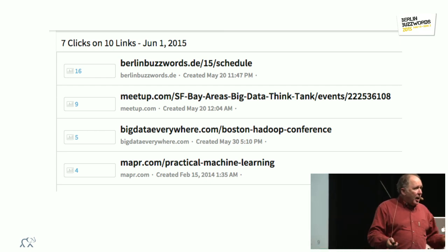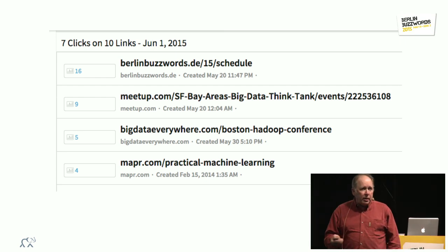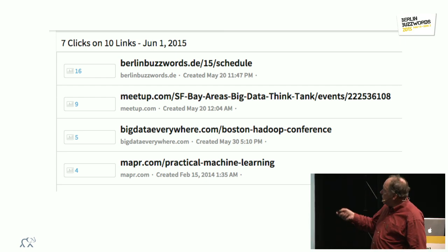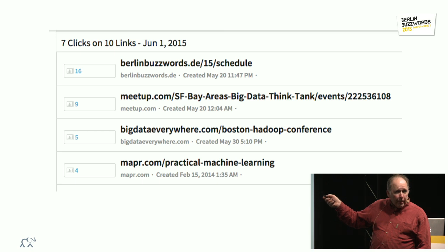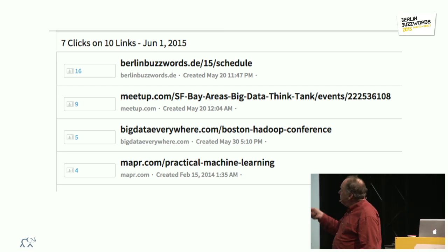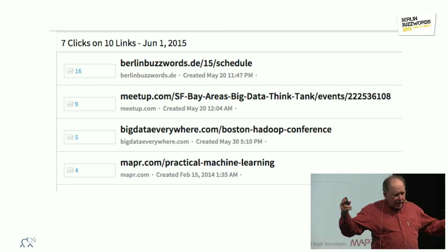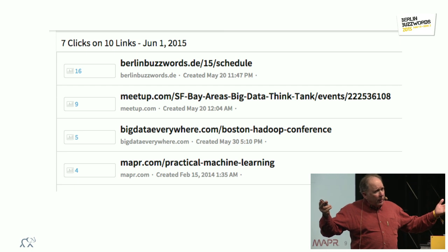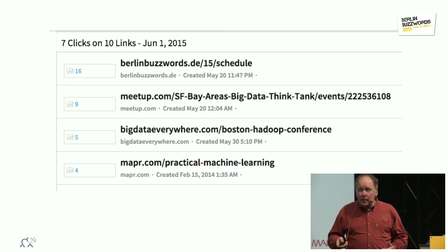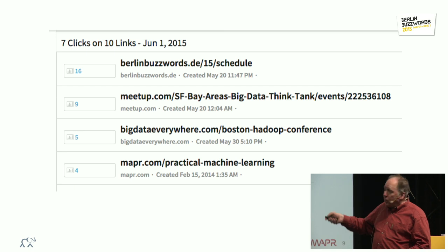This is from a very popular URL shortening site. I won't say their name because it's probably too embarrassing, but if you notice, there are seven clicks today on ten different links. Seven clicks, ten different links. Sixteen of the seven clicks came from buzzwords. Okay, seven clicks, ten links, all non-zero apparently. I think we have a problem from the beginning, and then sixteen, nine, five, and four.